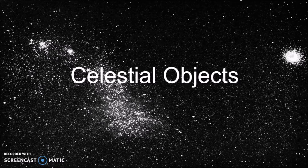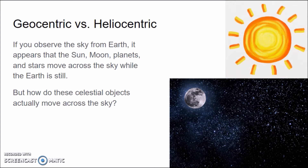This video is about celestial objects in our solar system. First, we're going to talk about the geocentric versus heliocentric model of the solar system. If you go outside and observe the sky from Earth, it appears like the Sun, the Moon, and the planets, and the stars all move across the sky while Earth is still.